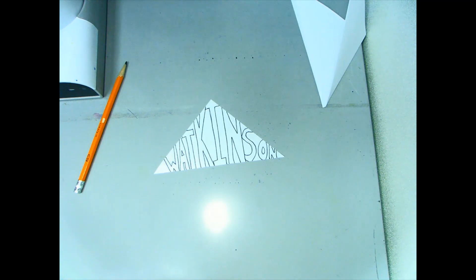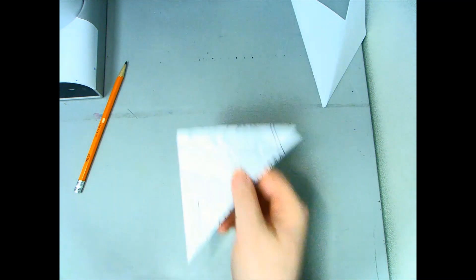Once you do that, trace it with your pen or to darken it up a bit more, use a sharpie. Make sure you do both sides of your paper.